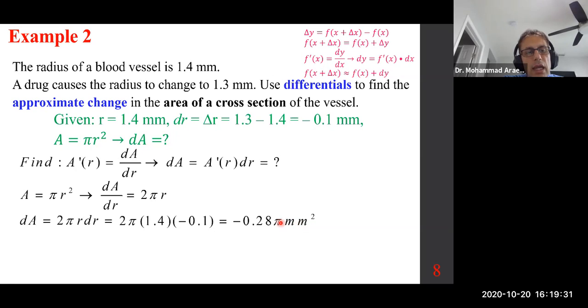Negative 0.28 pi millimeters squared. The units for dA are the same as the units for A, because it's change, instantaneous rate of change in essence. And if you replace the pi with 3.14159, that's what you get. Can anybody tell me how we can find, instead of an approximate change in the area, the exact change? Can anybody tell me how we find the exact change?